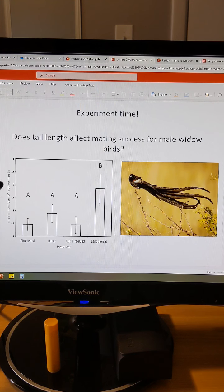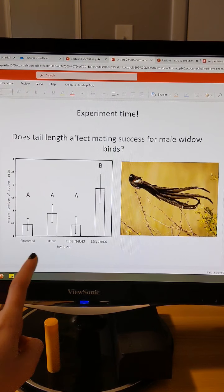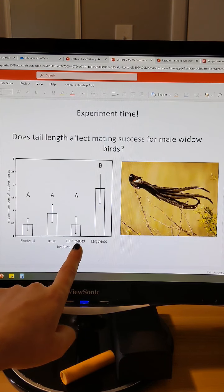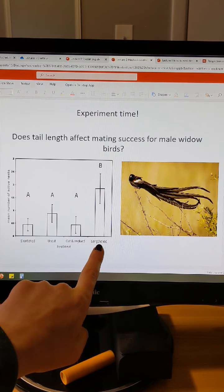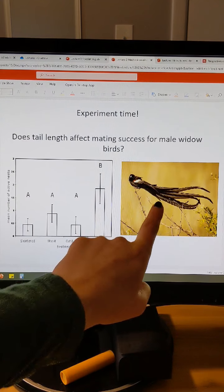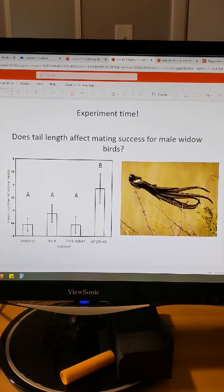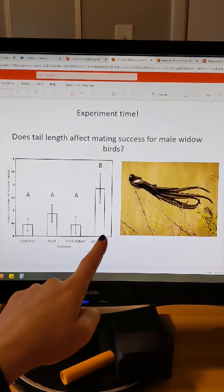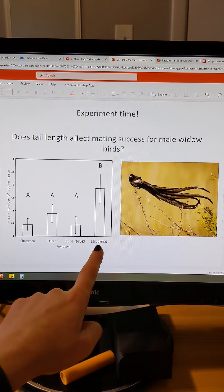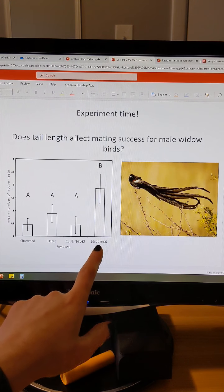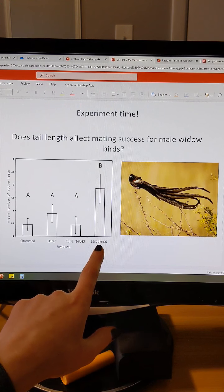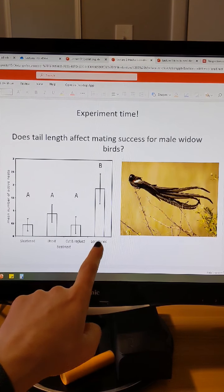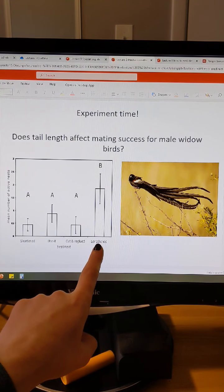And the data looks like this. We have the mean number of active nests from zero to three. And then we have the treatment, shortened tails, uncut tails, cut tails that were glued back on so they stayed the original length, and then lengthened tails. And based on the results, they found that females preferred males with longer tails, even if it's not a naturally long tail. It's glued on. But even those artificially lengthened tails made these birds more attractive and they reproduced more often. That means that these birds, their genes and their alleles are going to be overrepresented in the next population.